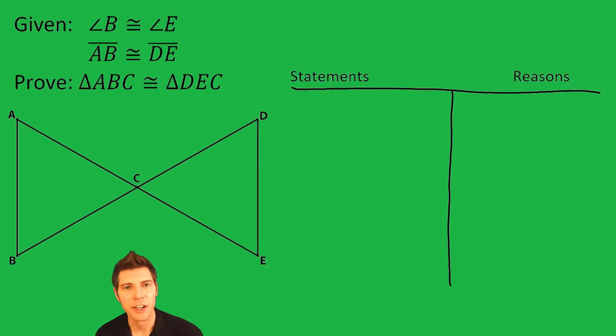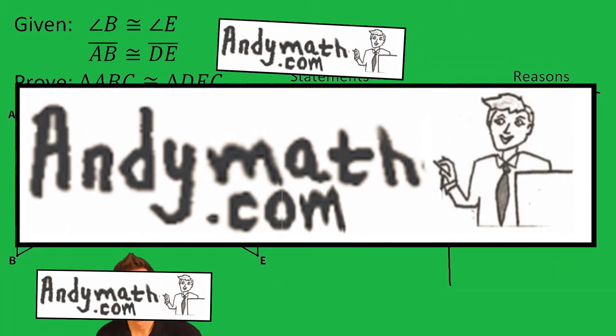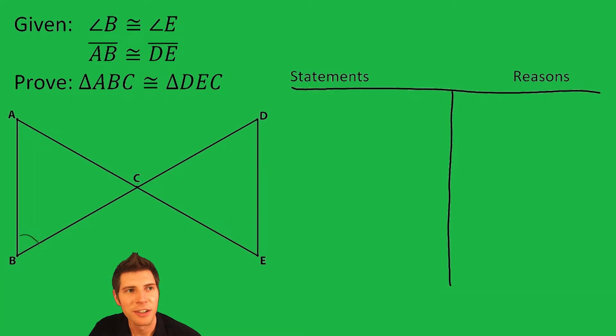Hey guys, welcome to this proof video. The given is that angle B is equal to angle E and that AB is congruent to DE. We want to show the two triangles ABC and DEC are congruent.